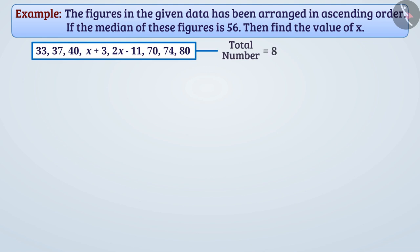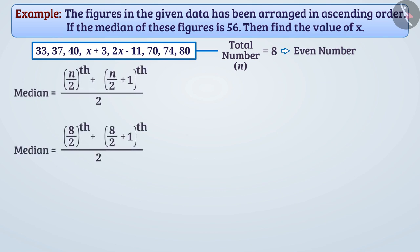The number 8 is an even number. We know that if the number of observations n is an even number, then the median is the mean of n/2 and n/2 + 1. Therefore, here the mean of the fourth and fifth observation is the median.